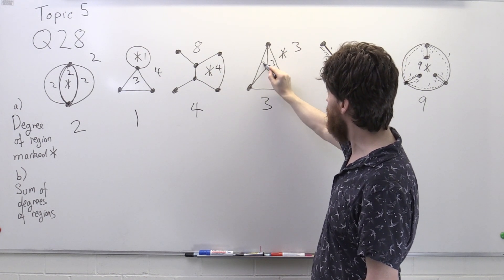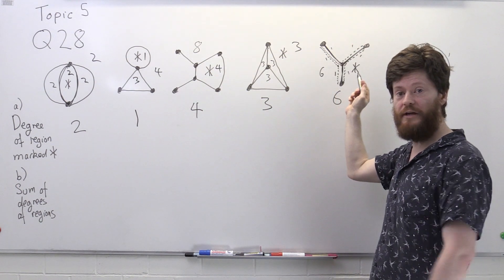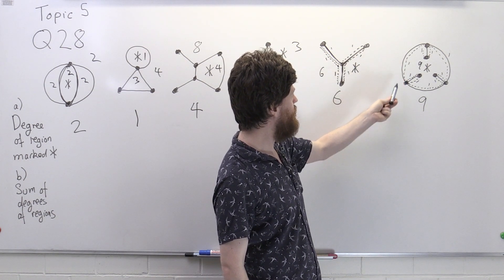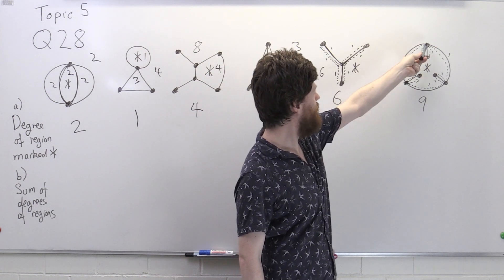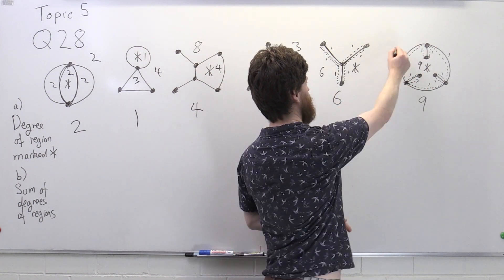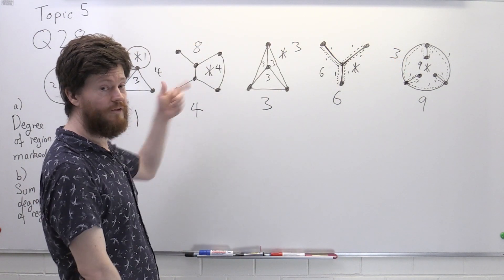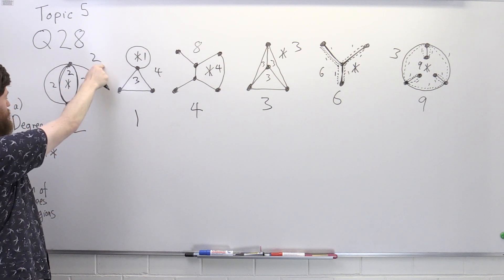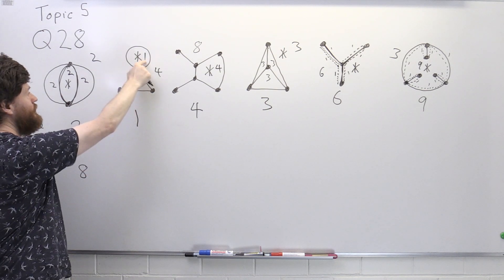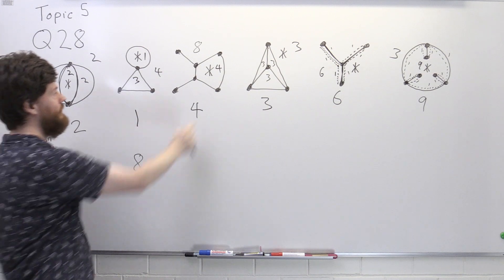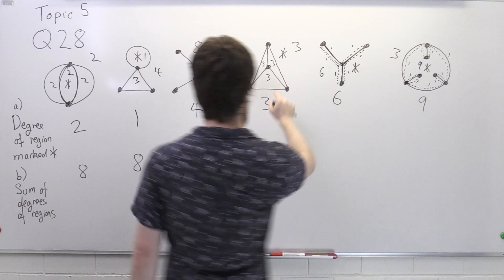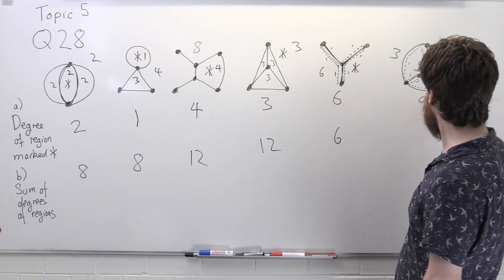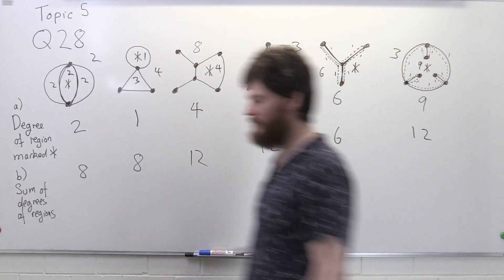Here the internal regions are all triangles so they're clearly degree three each, giving four times three equals twelve. For the graph with only one region, the sum is just six. For the last graph, the internal region has degree nine and the external region has degree three — going from here to here, here to here, and here to here — so the sum is nine plus three equals twelve.